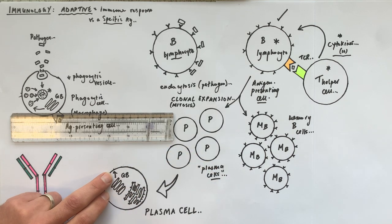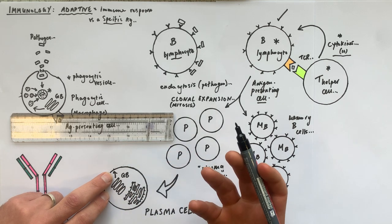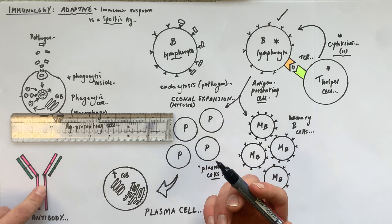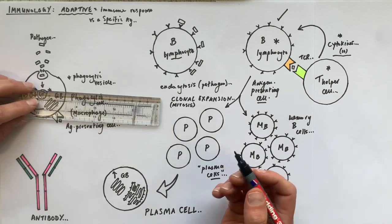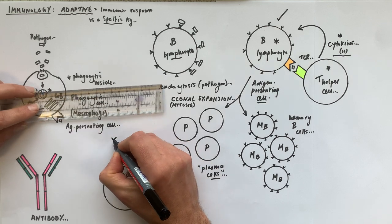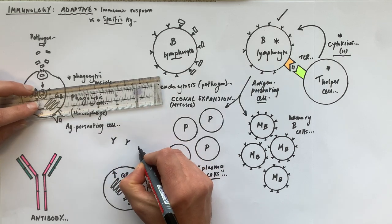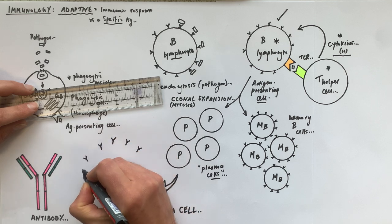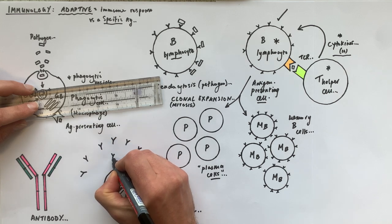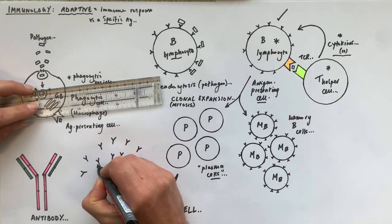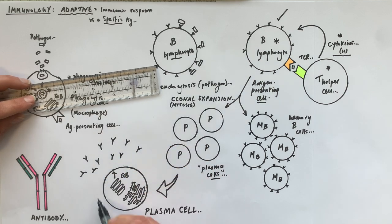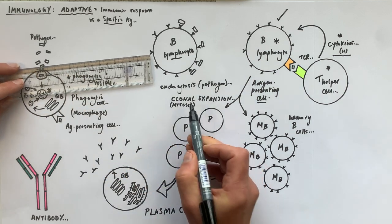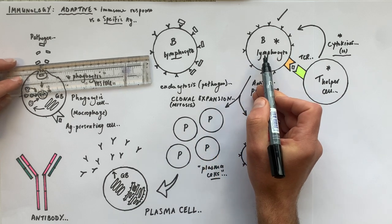Through secretory vesicles that pinch off from the end of the Golgi body, the proteins migrate and fuse with the cell membrane, releasing and secreting the antibody proteins via exocytosis into the blood from all thousands of plasma cells made via clonal expansion.